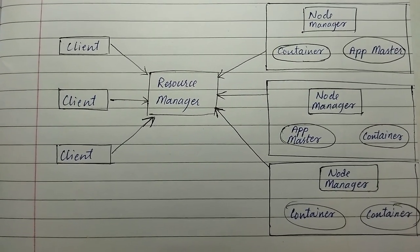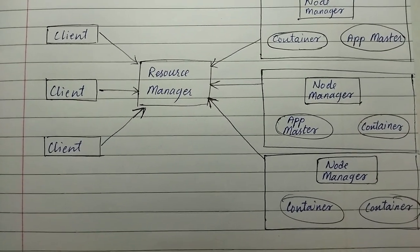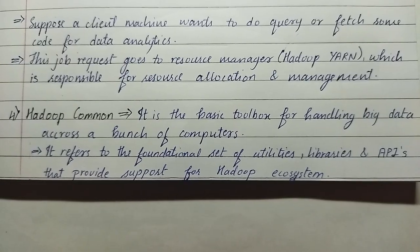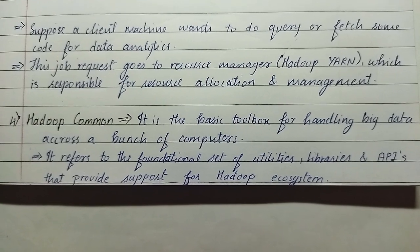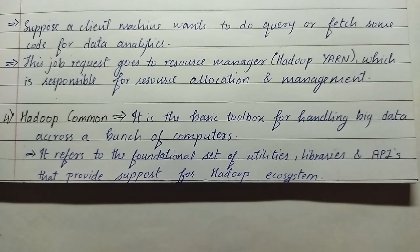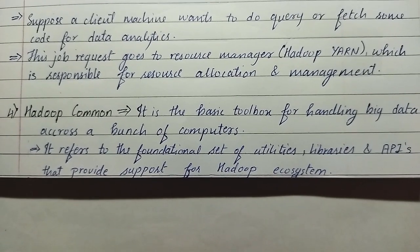The client sends a request to the resource manager about what job needs to be done, then the resource manager manages the tasks accordingly. Suppose a client machine wants to do a query or fetch some code for data analytics. This job request goes to the resource manager, Hadoop YARN, which is responsible for resource allocation and management.